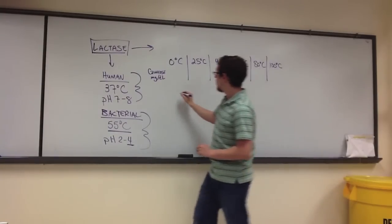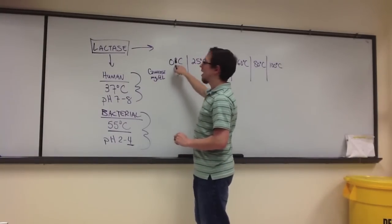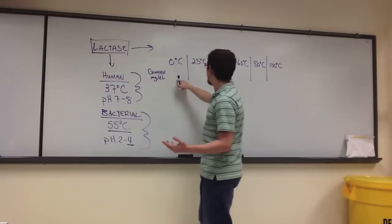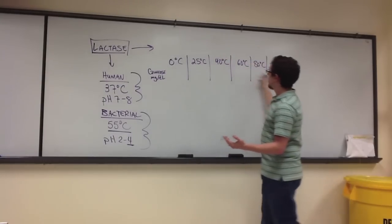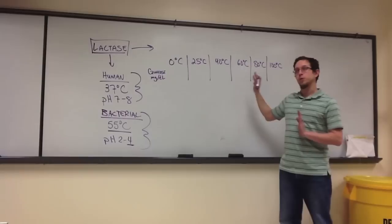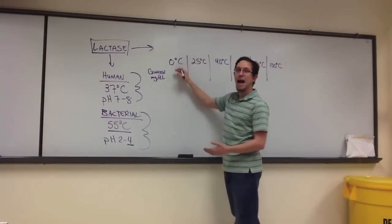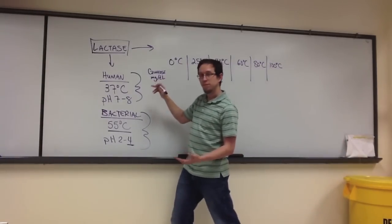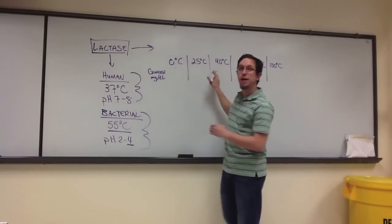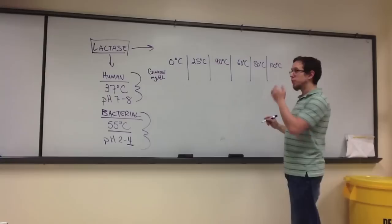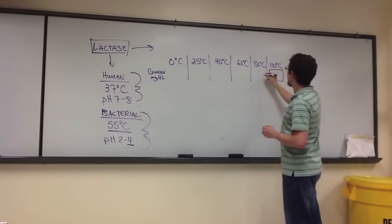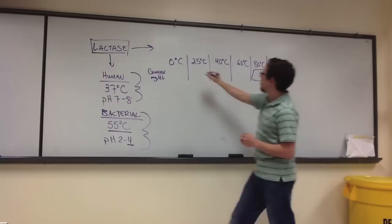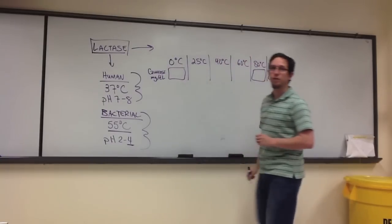So you took a tube, and you put lactase in it, and you set it at 0 degrees for 5 minutes, 25 degrees for 5 minutes. So you had 6 different tubes sitting at these temperatures for 5 minutes. At the end of that 5 minutes, you then added the milk to each tube, and incubated them again for 10 minutes.